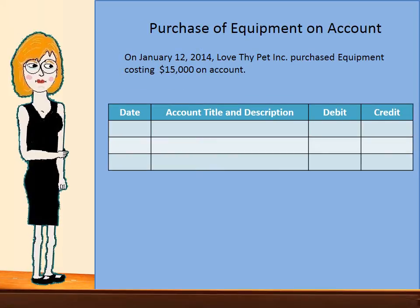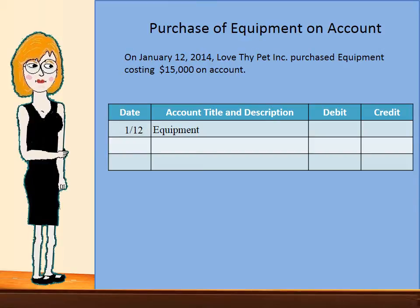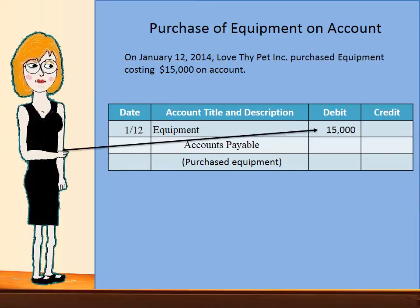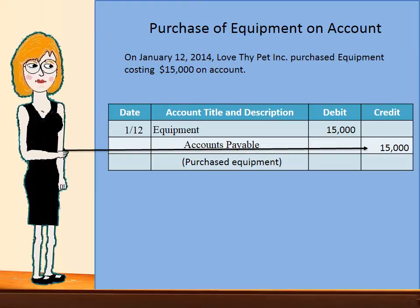Now let's look at the purchase of equipment on account. The date is January 12th, so the date will be 1-12. We are purchasing equipment, which is an asset account, so we will debit equipment for the increase. And 'on account' meaning we are charging it, so we will use the liability account accounts payable. Our description will be 'purchased equipment.' The dollar amount will be $15,000. We will debit the equipment account, indicating that we are increasing the asset account equipment, and we will credit accounts payable for the same amount, indicating that we are increasing the amount we owe to someone else.